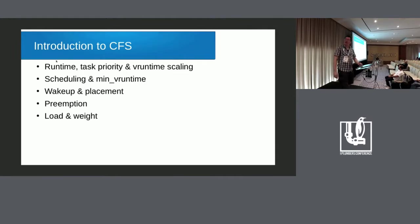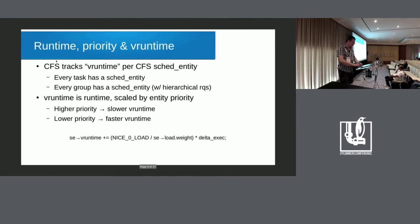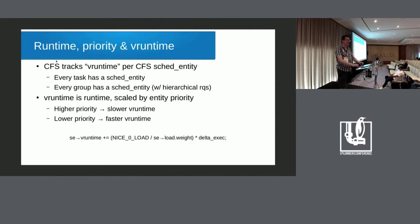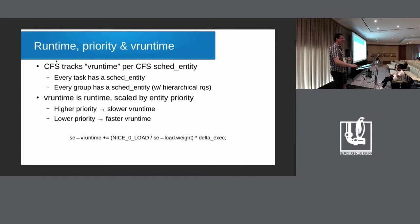In CFS, everything revolves around v-runtime. V-runtime is basically a mix of a priority number and CPU time used, merged into one number. Every task and every group has a sched entity, which is a data structure in CFS that tracks all kinds of statistics about a task, including the priority of that task or cgroup and the amount of time it's been running. From that, it calculates a v-runtime.